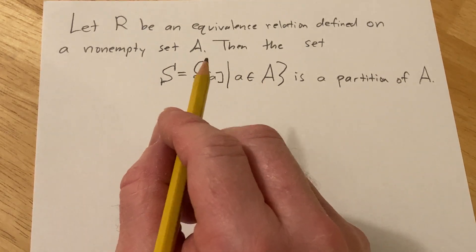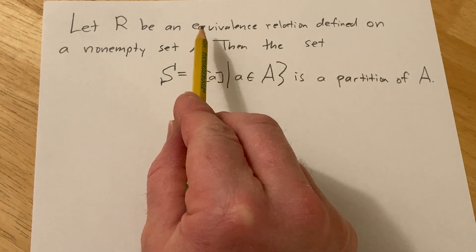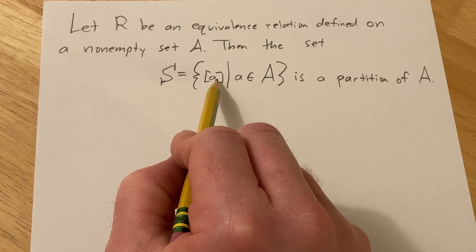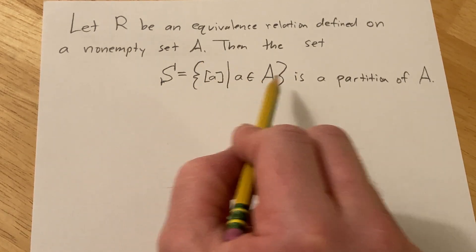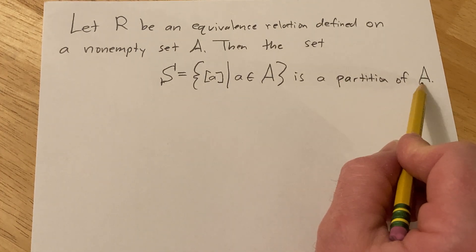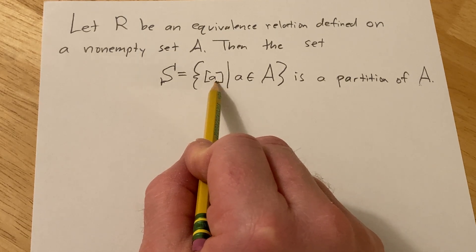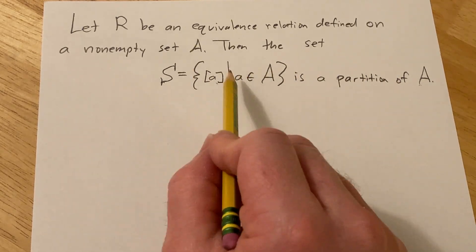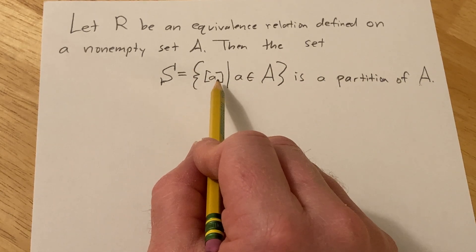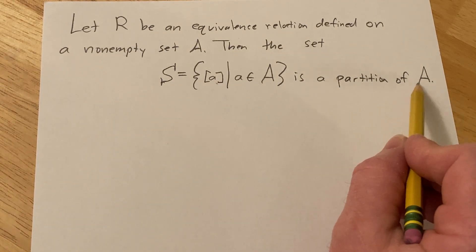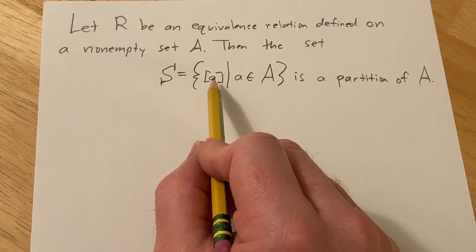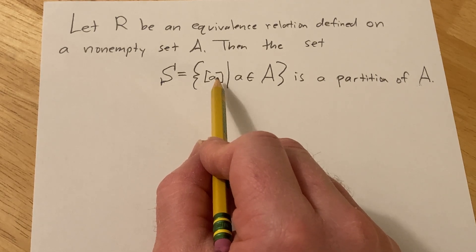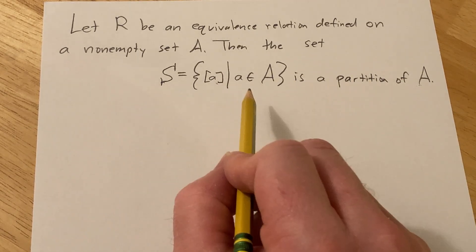Hello, in this video we're going to do a very important proof. We're going to prove that when you have an equivalence relation on a non-empty set, the equivalence classes partition your set. That basically means that every element in our set A belongs to exactly one equivalence class, and all of these are also non-empty. A partition of A is a collection of non-empty subsets of A such that every element in A belongs to exactly one of these subsets. Said another way, we have a non-empty collection of pairwise disjoint sets whose union is A.